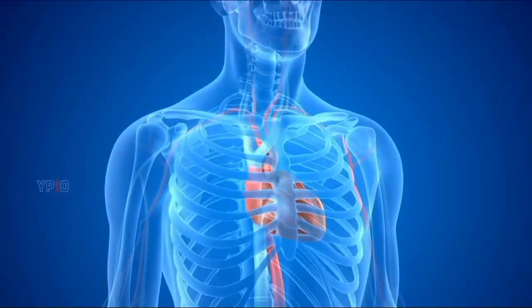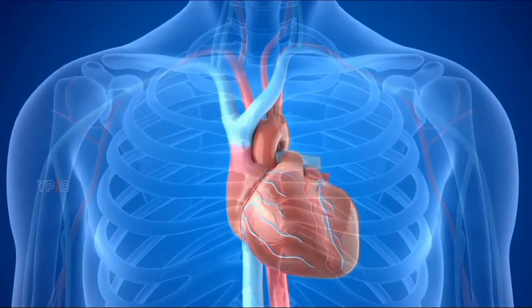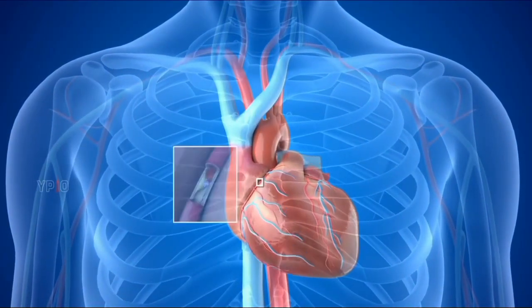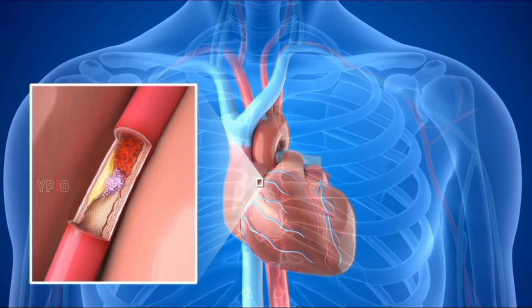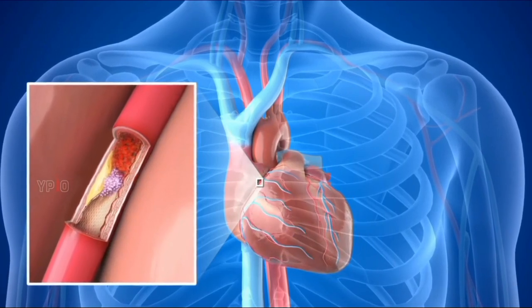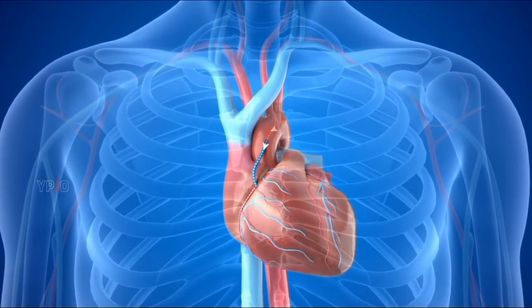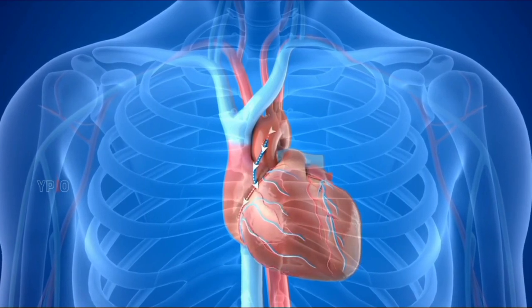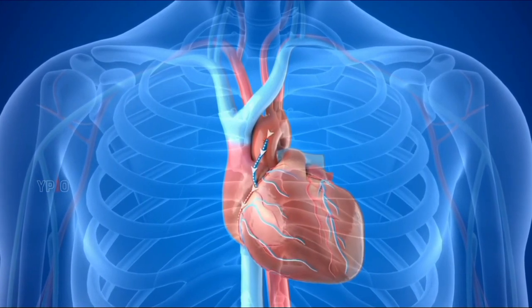Coronary artery bypass grafting is a surgical procedure to bypass a blocked artery of the heart. It involves harvesting a small piece of blood vessel, most commonly a vein from the leg, and using it as a graft. The procedure is indicated for the treatment of coronary artery disease, a serious risk factor for heart attack, and is very effective in reducing symptoms, preventing heart attacks, and reducing death.